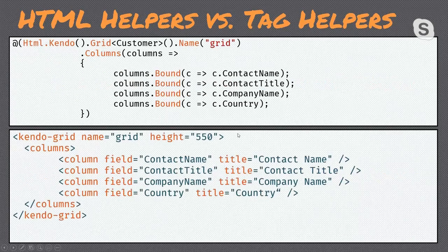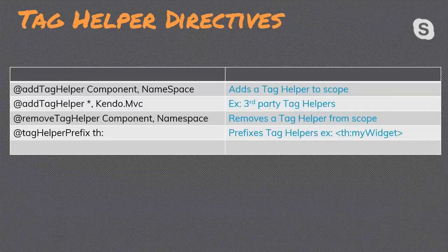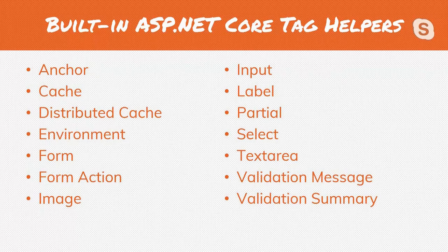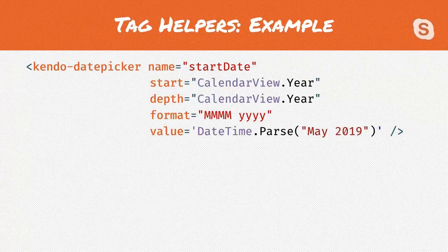Looking at a more complex example like a Telerik grid: HTML helpers offer a fluent syntax, but the tag helper equivalent looks a lot like HTML and doesn't stand out or require context switching inside a large page. We can control the scope of tag helpers with the add-tag-helper directive. There are built-in tag helpers in ASP.NET Core for everything you need to build a form. Telerik UI for ASP.NET Core provides about 60 UI components supporting both HTML helpers and tag helpers — for example, a date picker that is very easy to read and understand.